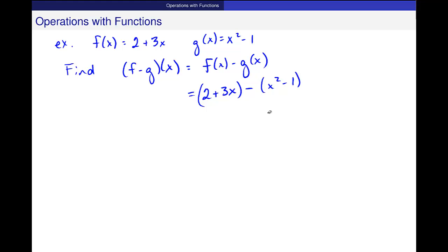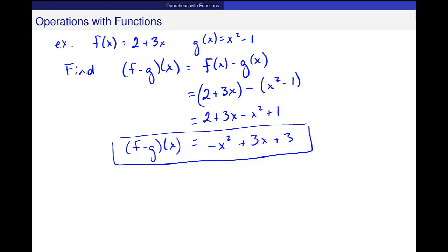I put those in parentheses to keep track of minus signs, and then I am going to distribute that minus to the piece that follows, to the x squared minus 1. So I'll write out 2 plus 3x minus x squared plus 1. And that gives me negative x squared plus 3x plus 3. And that's my function f minus g of x.